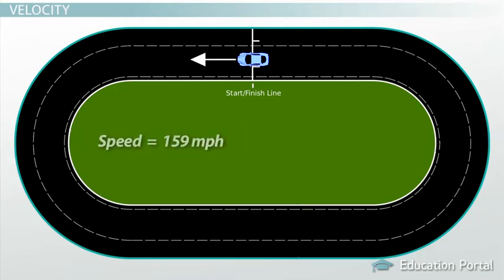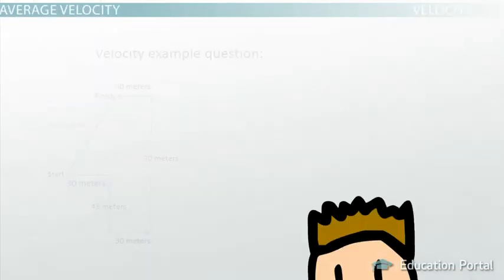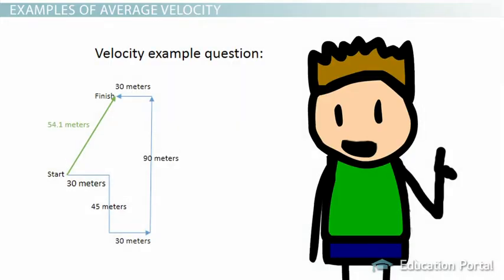As you can see, his speed was 159 miles per hour, but his velocity was zero miles per hour. But solving for velocity and getting zero probably doesn't help very many people understand this. Let's look at another velocity problem to try and make things clearer.